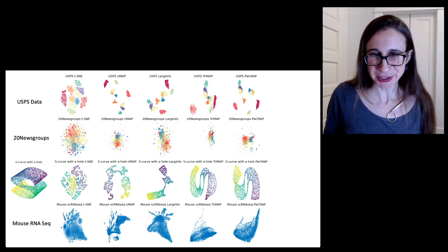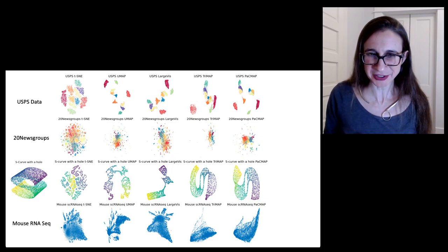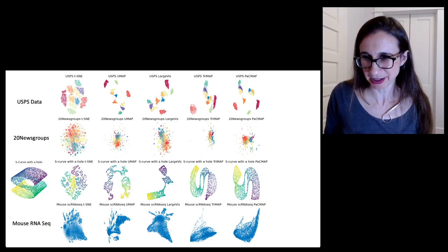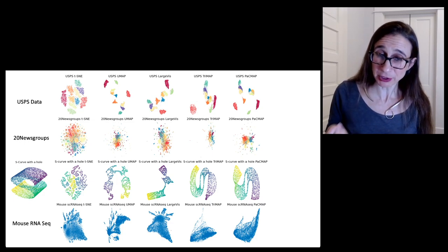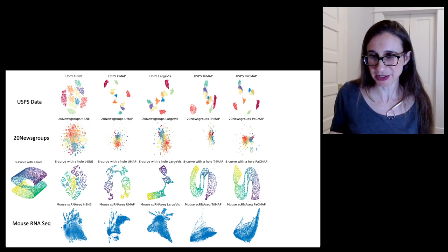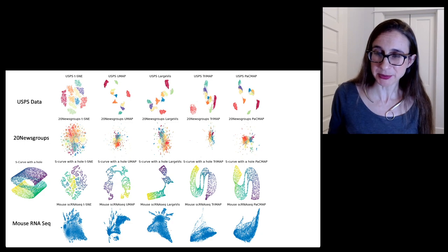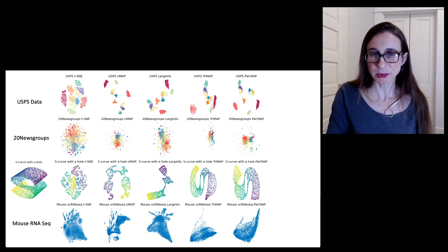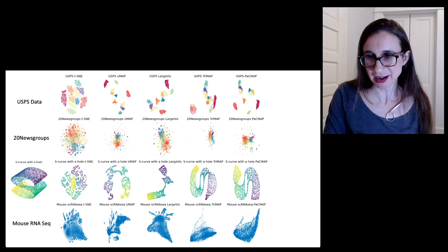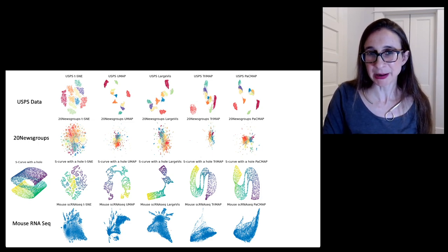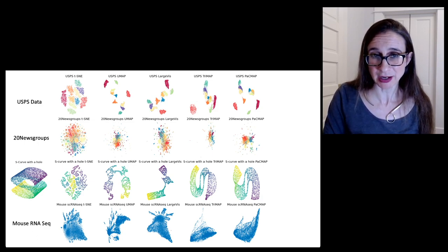Here's some more interesting results. I want to just point out the S-curve with the whole dataset. That's the dataset where global structure is important. And again, you see here that the algorithms that favor local structure like t-SNE, UMAP, and LargeVis don't do a very good job with this dataset, whereas TriMap and PacMap do really well. With the other datasets that favor local structure like the USPS data on the top, PacMap is performing again similar to UMAP and LargeVis.